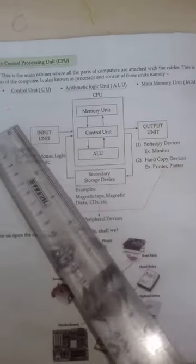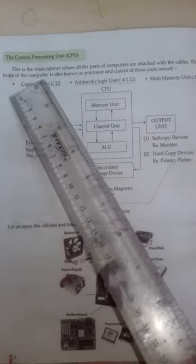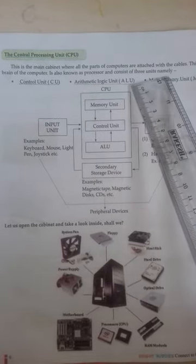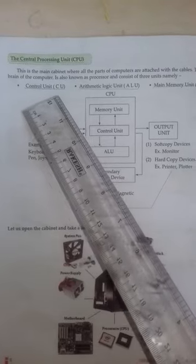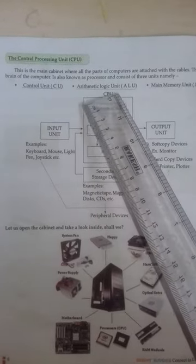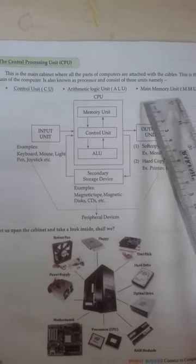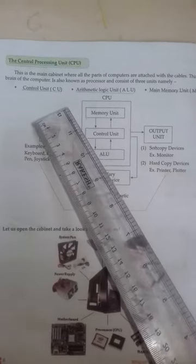This is the brain of the computer. It is also known as the processor and consists of three units, namely: Control Unit (CU), Arithmetic Logic Unit (ALU), and Main Memory Unit (MMU).